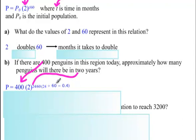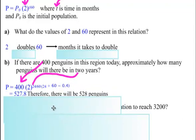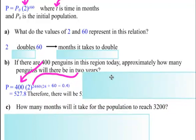You can just take your calculator, go 24 divided by 60, you get 0.4. And then on your calculator now, all you do is you go 2 to the exponent 0.4, then times it by 400, and you'll come up with 527.8, or basically 528 penguins. So that's how you do that on your calculator.